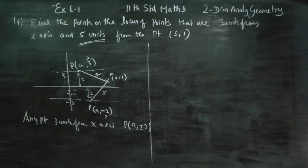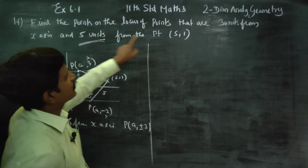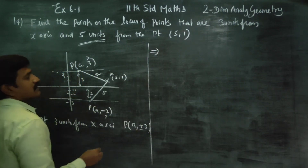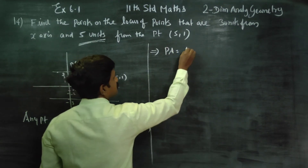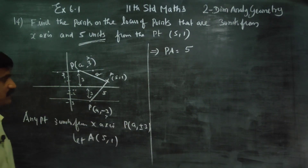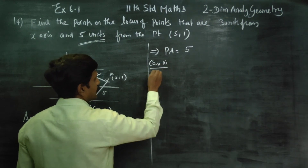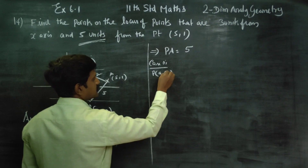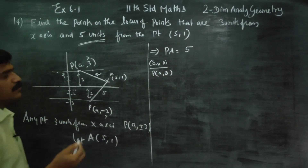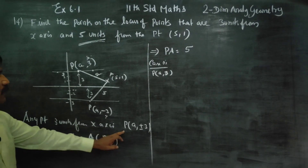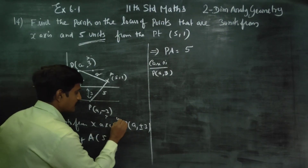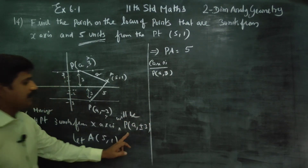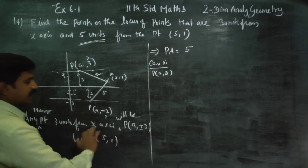How will you say the distance? Distance 5 units from the point implies: let A = (5, 1) and P·A = 5 units. Case 1: P = (a, 3). The moving point 3 units from the x-axis will be of this form, P = (a, plus or minus 3).